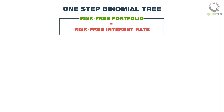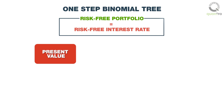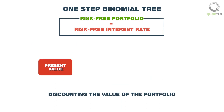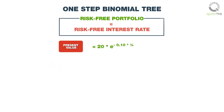Let us use the assumption that a risk-free portfolio must have its returns equal to the risk-free interest rate. The present value of the portfolio will be calculated by discounting the value of the portfolio three months in the future, which we have seen to be 20 rupees. Assuming the risk-free interest rate to be 10% and the time period to be one divided by four years, the present value of the portfolio is 20 multiplied by e raised to the power of negative 0.10 times one divided by four. Therefore, the present value of the portfolio is equal to 19 rupees and 50 paise.